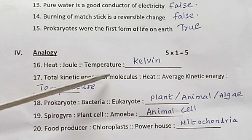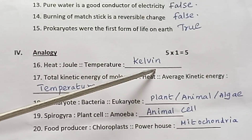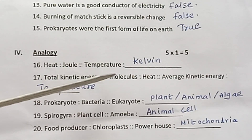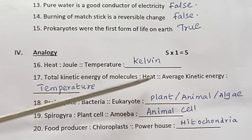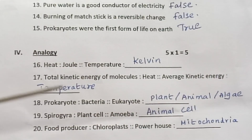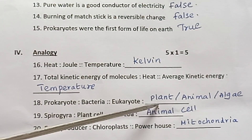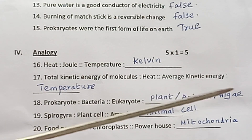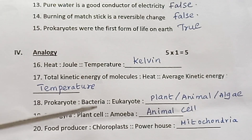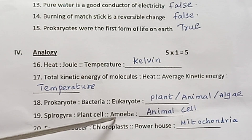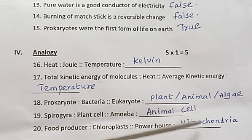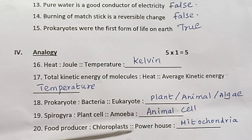Analogy answers: Heat — Joule; Temperature — Kelvin. Total kinetic energy of molecules — Heat; Average kinetic energy — Temperature. Prokaryote — Bacteria; Eukaryote — Plant/Animal. Algae — Spirogyra; Amoeba — Animal cell. Food producer — Chloroplast; Powerhouse — Mitochondria.